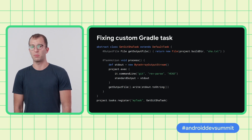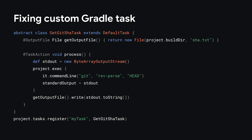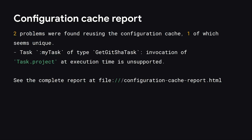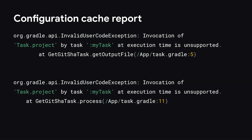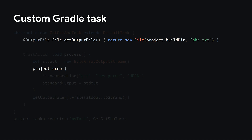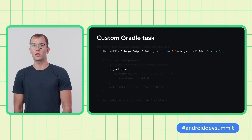Let's take a look at the following incompatible example. Here we have a task that computes the current Git SHA and writes it to an output file. It runs the Git command, captures its output, and writes the value to a file. Running the task with configuration cache enabled shows two configuration cache problems. When your build is incompatible with configuration cache, Gradle will generate an HTML file which contains a list of issues with more information. The HTML report shows stack traces pointing to the issues — in this case, pointing to lines 5 and 11 in the build script. Going back to the task source, we can see project access in the function that returns the file output location — that's the first reported issue. The second issue is usage of project in the task action, which is global state that cannot be accessed with configuration cache enabled.